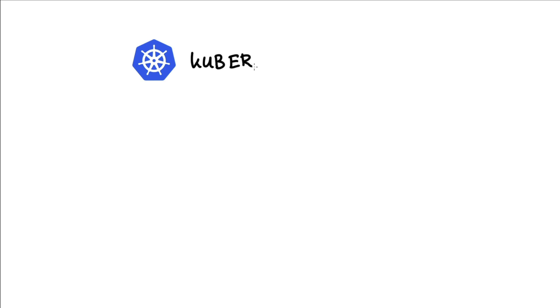In the previous video in this series, we talked about this need for a tool like Kubernetes. It's a tool that will help us orchestrate Docker containers such that we can deploy a service. What I'm going to do in this video is try to give a glimpse on how Kubernetes manages to orchestrate the workload on a cluster of machines.